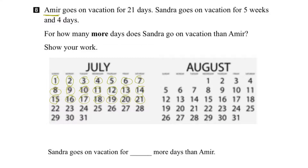We can see that there are 7 days in a week, so Amir is on vacation for 1, 2, 3 weeks. So we can say 21 days divided by 7 days in a week equals 3 weeks. Now let's look at Sandra.